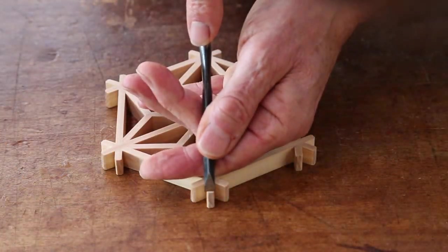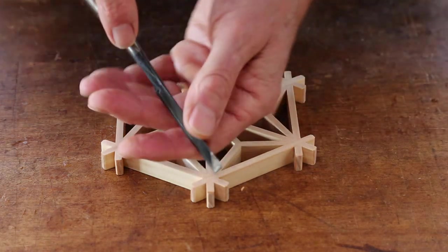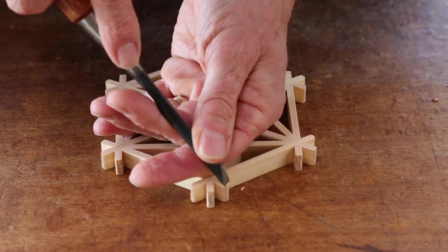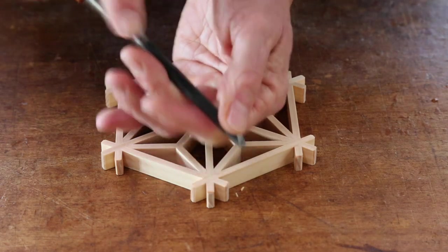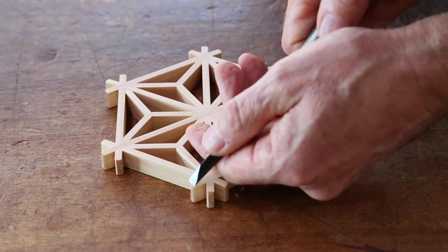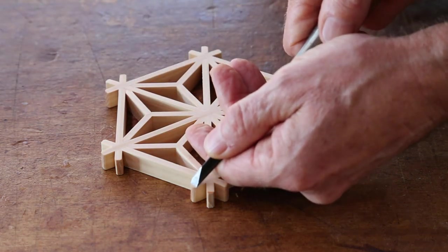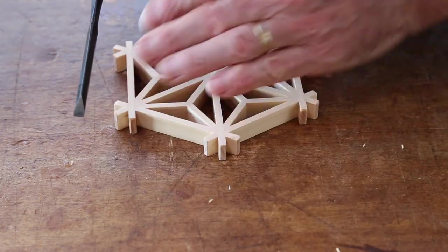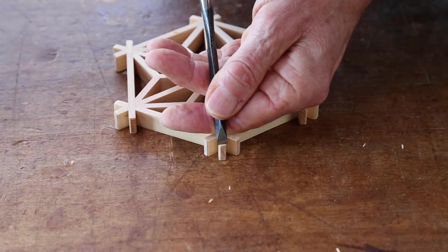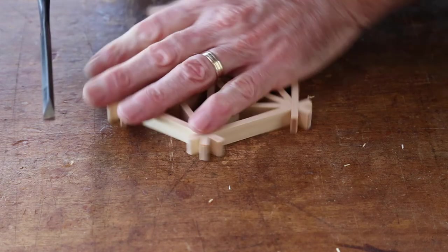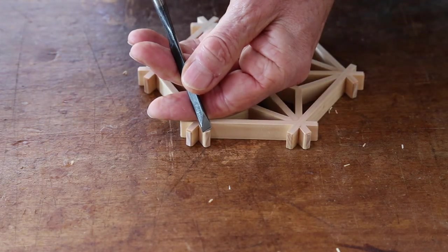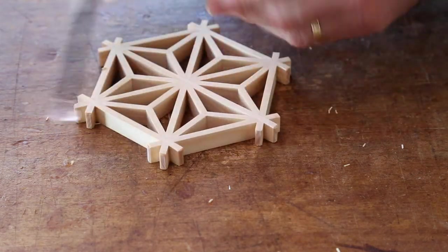The final step is to clean up the face of the coaster, then place a slight chamfer on the top of each of the extensions to finish up the project. The main aim of this video was to explain the concept of the Mitsukude joint and how it all fits together, and in the process we end up with a coaster.